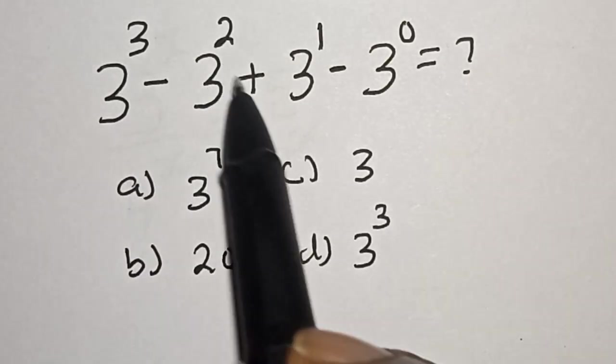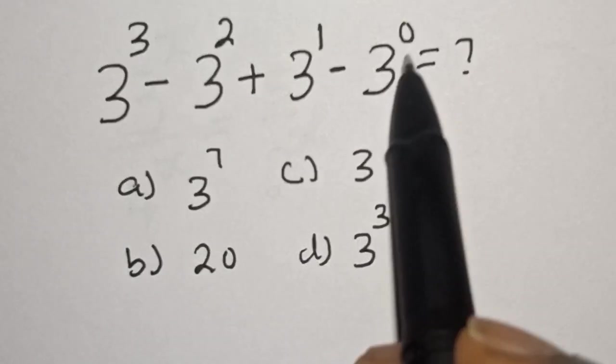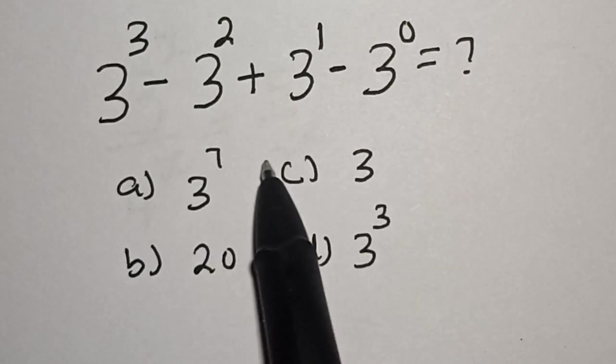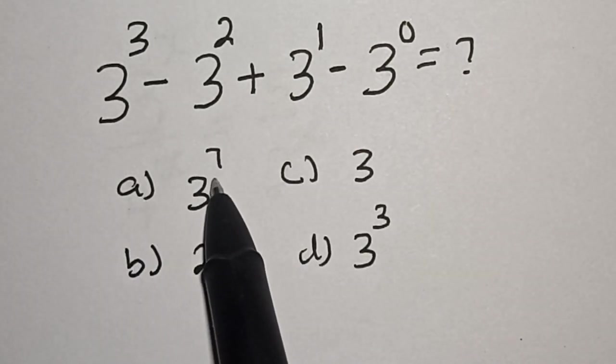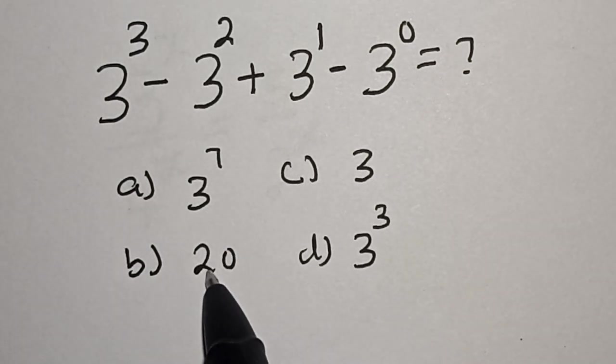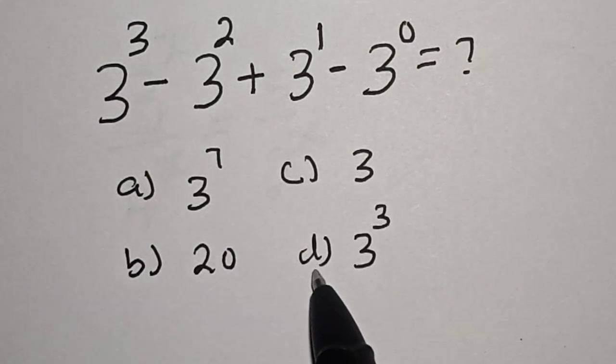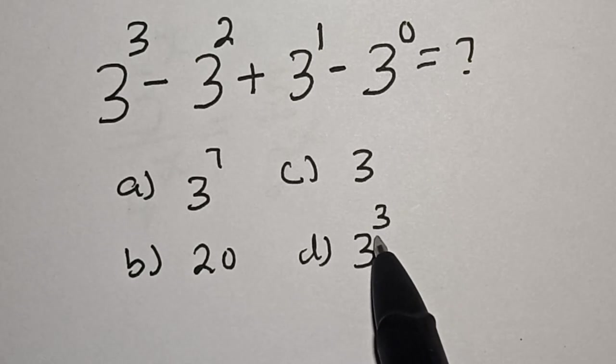3 raised to power 3 minus 3 squared plus 3 raised to power 1 minus 3 raised to power 0 with the following options. A is 3 raised to power 7. B is equal to 20. C is equal to 3. And D is equal to 3 raised to power 3.